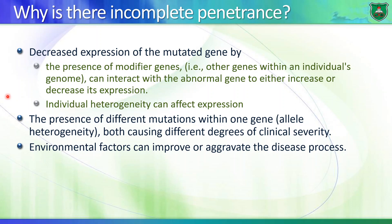Incomplete penetrance can also result from individual heterogeneity — interaction between the produced protein and some other protein that compensates for loss of function, different mutations within one gene (allele heterogeneity) affecting symptom severity, or environmental factors. We'll discuss environmental factors more in part three when we talk about multigenic or multifactorial disorders — you need to differentiate between single-gene disorders and those.